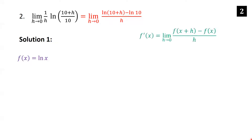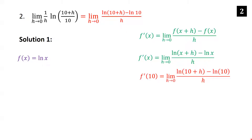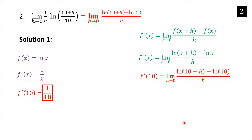Letting f(x) = ln x, the definition of the derivative gives f′(x) = lim_{h→0} [f(x+h) − f(x)] / h. For f(x) = ln x, this is lim_{h→0} [ln(x+h) − ln(x)] / h. There's a 10 in our expression, so we plug in x = 10 to get [ln(10+h) − ln(10)] / h, which matches exactly. Using the shortcut, the derivative of ln x is 1/x, so the derivative at 10 is 1/10.